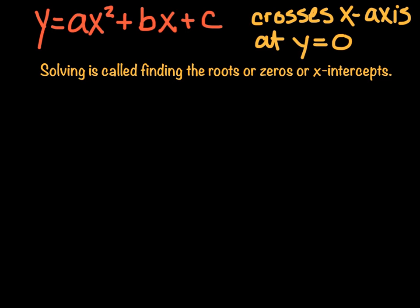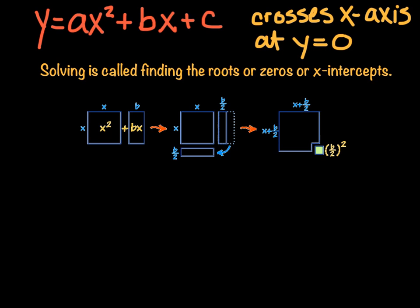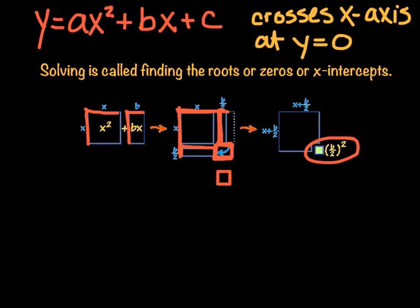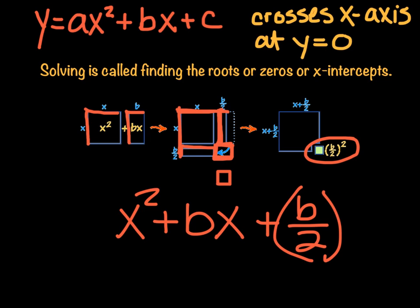Let me explain what completing the square even means. Here we have a square — we have x squared, so that means it's a square with sides x and x. We're going to add bx, so that means we have a rectangle with sides b and x. We can take that rectangle and split it in half, so we've got half of bx here and half of bx there. If we add those two to this x squared square, we almost have another perfect square, but we're missing one little piece. If this square is going to be x plus b over 2 on each side, the missing piece has length b over 2 times b over 2, or b over 2 squared.